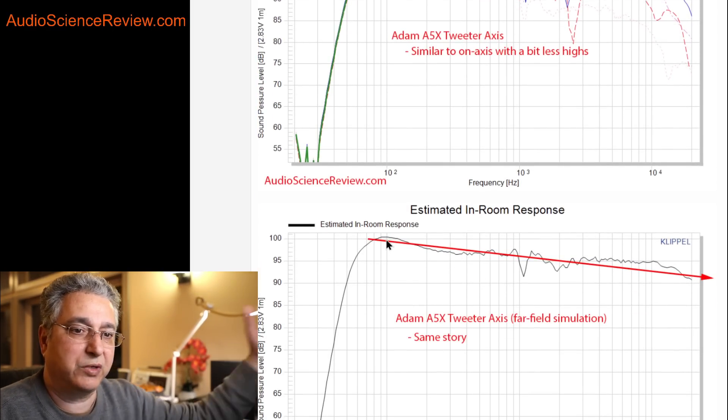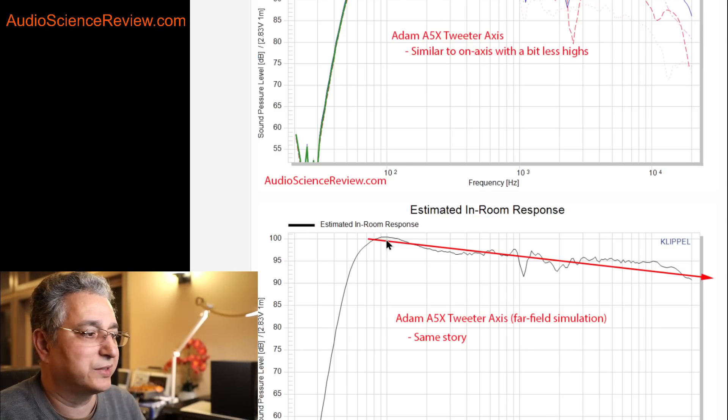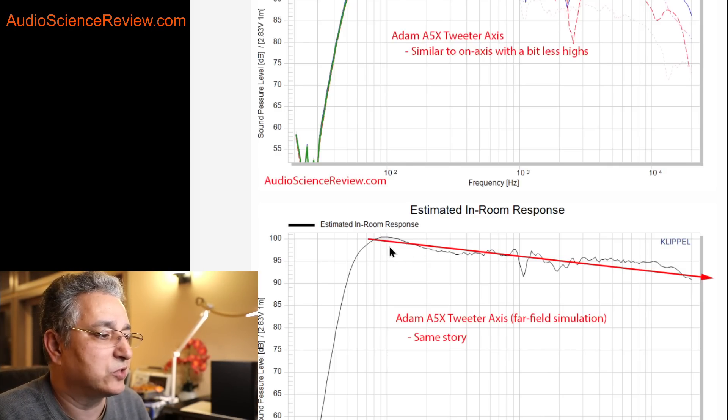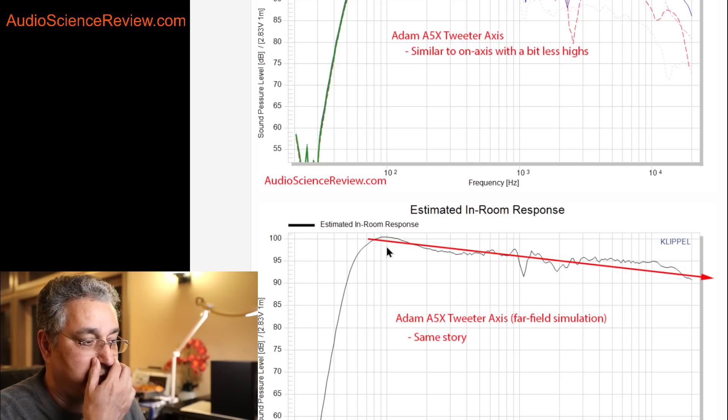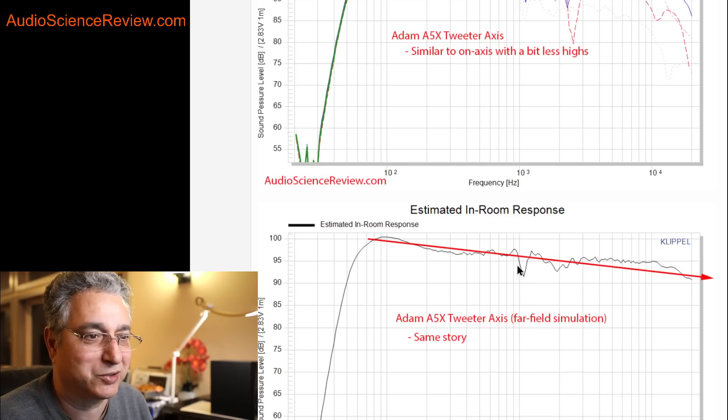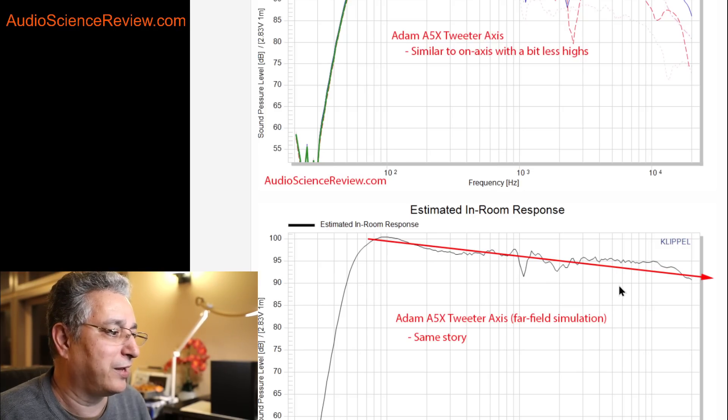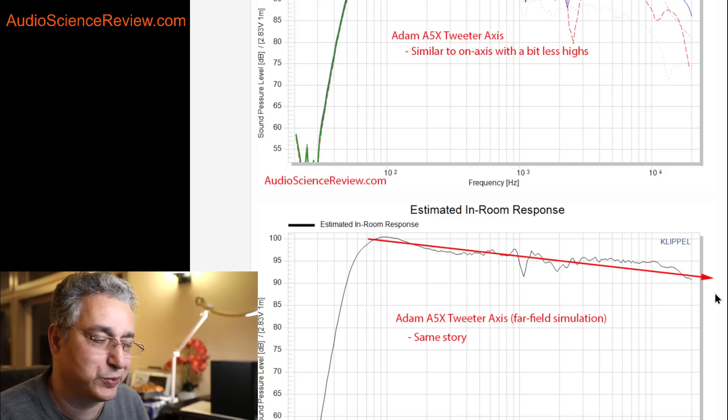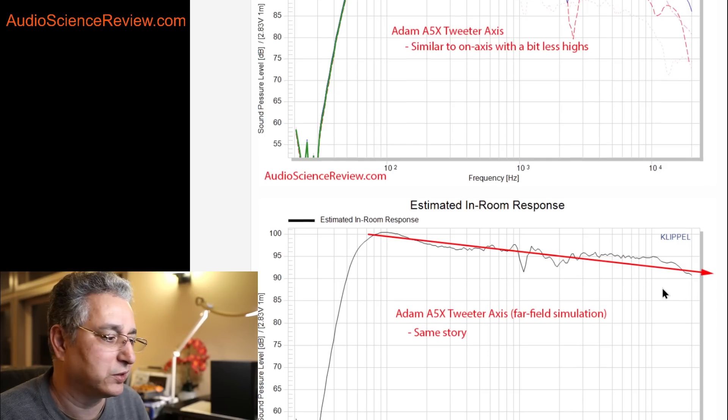If you had the speaker in far field, meaning stereo listening, not on your desk, we can model what that response could typically look like. And when we do that, lo and behold, what we already know shows up again, which is we have this trough in here. And this is the frequency response. And by the way, above 10 kilohertz, it droops down because the tweeter gets very directional.